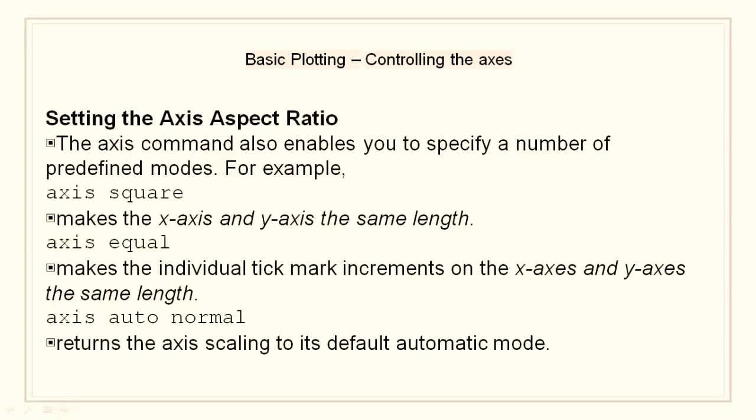Setting the axis aspect ratio. We can also set axis aspect ratio using a number of predefined modes. For example, axis square makes the x-axis and y-axis of the same length. Axis equal makes the individual tick mark increments on both x-axis and y-axis of the same length. And axis auto normal returns the axis scaling to its default automatic mode.